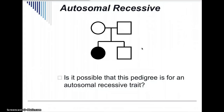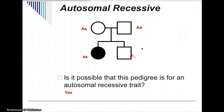Let's go through those genotypes. Both parents have at least one dominant allele, the son has a dominant allele, and the daughter only has recessive alleles. If both parents are heterozygous, we can do a Punnett square and find there's a 25% chance they would have a child that has the recessive trait. So this is possible — and in fact it's probable that this is for a recessive trait.